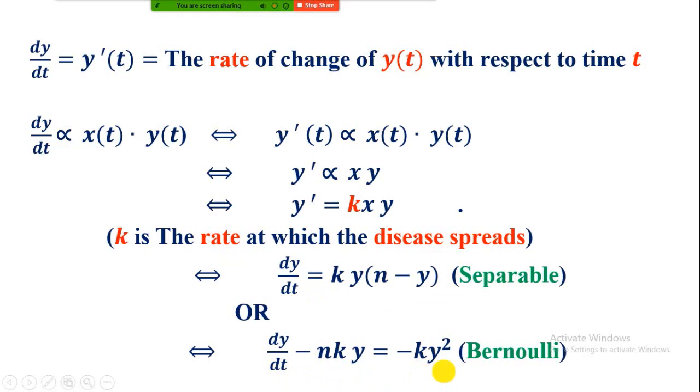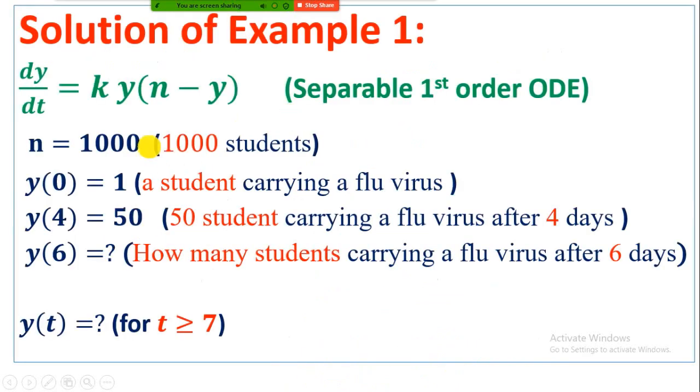This is also called Bernoulli equation. For example one, n is equal to 1000 total population. y of 0 is equal to 1 represents that a student carrying a flu virus initially. So this is the initial condition.